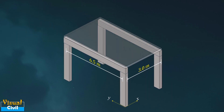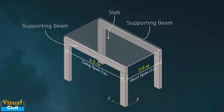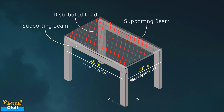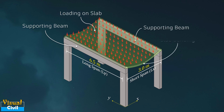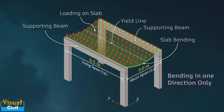Consider a slab of size 6.5 meter by 3 meter which is supported by the beams along the longer span. When the slab is loaded with uniformly distributed load, it bends only in one direction — that is, along the shorter span — as the slab is supported on the longer side only. Therefore, whenever a rectangular slab of any length and width is supported on two opposite edges, the slab bends only in one direction. Hence it is called a one-way slab.